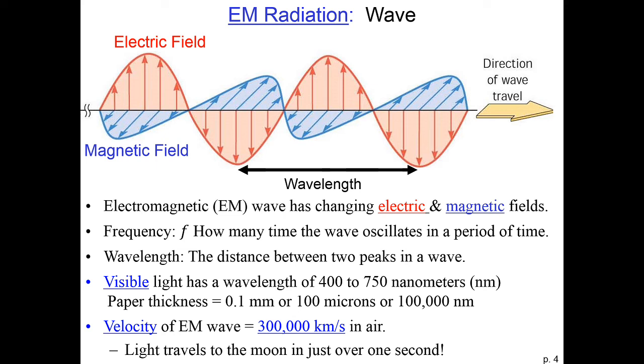You should notice that the wavelength is the distance traveled for each oscillation, and the frequency is the number of oscillations per second. So the frequency times the wavelength is the velocity. Visible light, the best known form of electromagnetic radiation, has a wavelength of 400 nanometers to 750 nanometers. Pretty small wavelengths.